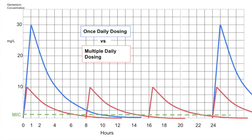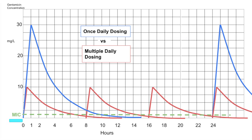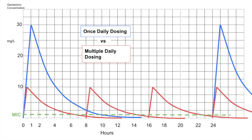Now let's talk about once daily dosing versus multiple daily dosing. With multiple daily dosing given over 24 hours, one dose is given every eight hours, or three times a day. With gentamicin you want the peak to be at least 10 times the minimum inhibitory concentration (MIC). After around eight hours it's pretty much underneath the MIC, so you give a second dose, and after another eight hours you give a third. Monitoring for multiple daily dosing requires taking peak and trough levels to make sure they are in target ranges.